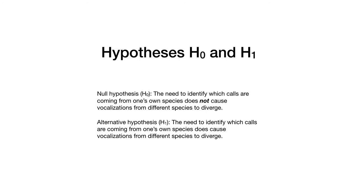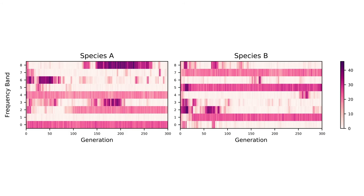This system is what we use to test our alternative hypothesis, or H1: that the need to identify which calls are coming from one's own species does indeed cause vocalizations from different species to diverge. A slight modification is needed to test the null hypothesis — that this need does not cause vocalizations to diverge. To test the null hypothesis, we assume that receivers already know which species is sending each message. Therefore, we remove the fitness component that rewards identification of the sender and only show receivers messages from their own species. We ran simulations 20 times under the assumptions of both the null hypothesis and the alternate hypothesis, for 300 generations of 50 individuals each.